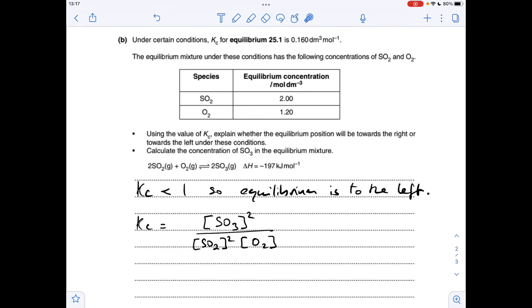So all we need to do now is rearrange for the SO3 concentration, which looks like that. So we'll just put the numbers in now, which gives an answer of 0.876 moles per decimetre cubed.